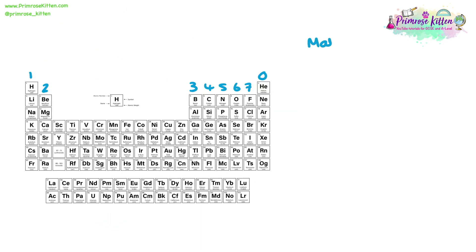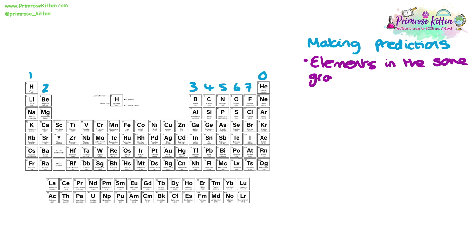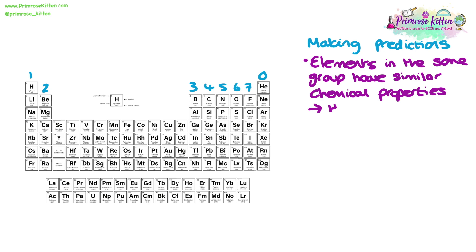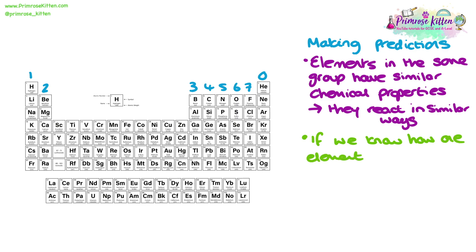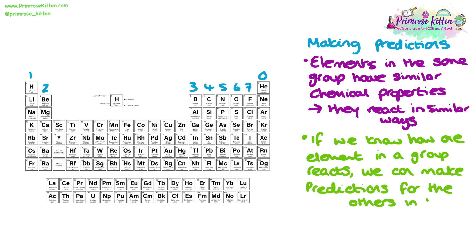The periodic table is so much more than just a table of elements — we can use it to make predictions. Elements in the same group have similar chemical properties, meaning they all react in a similar way. If we know how one element reacts, we can predict how others in that group will react. For example, knowing sodium is low density and reacts vigorously with water lets us predict lithium and potassium will react similarly. Group 7 halogens are another example — all highly reactive non-metals that are poisonous or toxic.